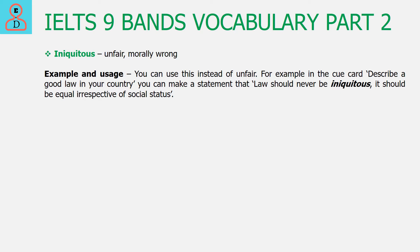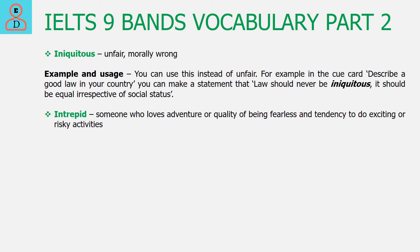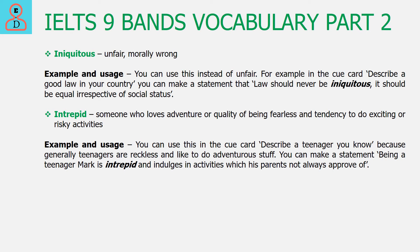The next word is Intrepid. It is an adjective and is used for a person who is adventurous in nature. Someone who likes to do risky or exciting activities can be described as an intrepid person. This word can be easily used in the 'Describe a teenager you know' speaking cue card, because teenagers generally like to do reckless activities, hence they are intrepid in nature. You can see the sentence that can be used in this cue card.